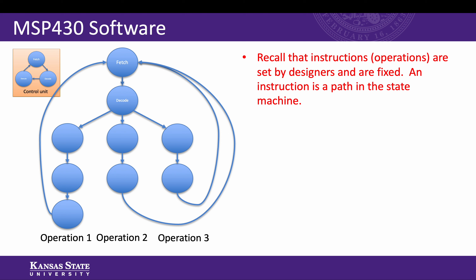We had recently been drawing the CPU with the control unit having three states, shown in the top left there: fetch, decode, execute, and so forth. But remember that the execute state is actually its own state machine with many different paths and states in each path. The number of paths in the state diagram is the number of instructions or operations the CPU can perform. The instruction set is determined by the CPU designers and is fixed by the state machine's hardware.